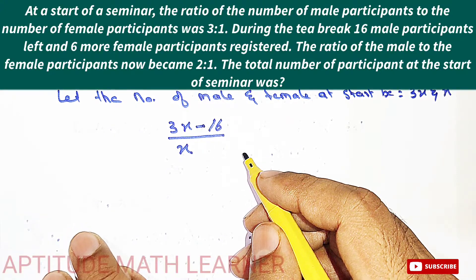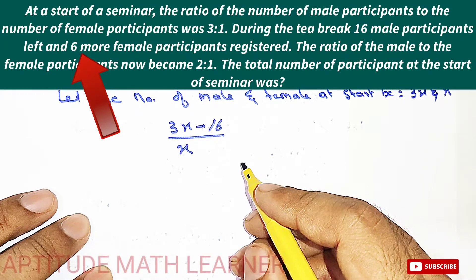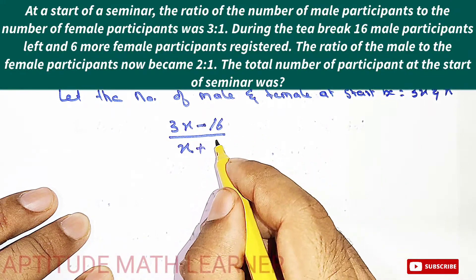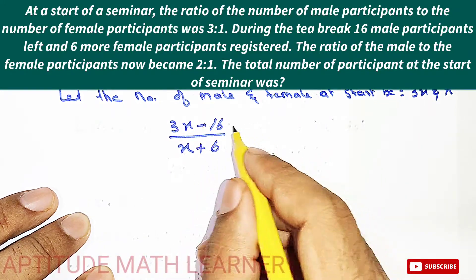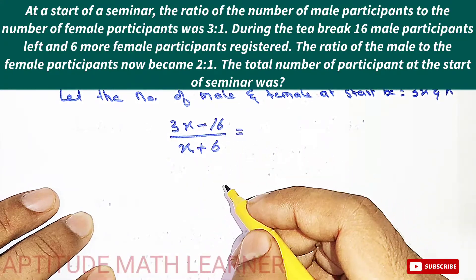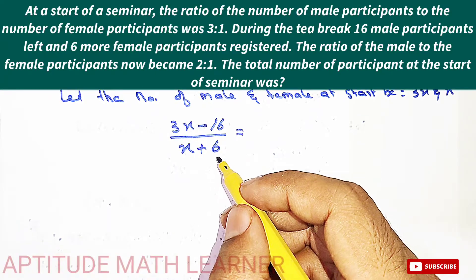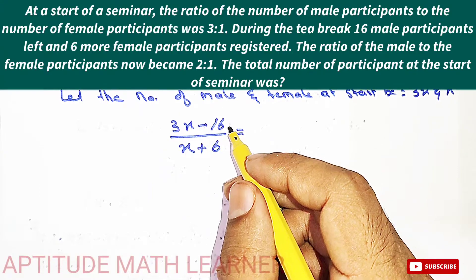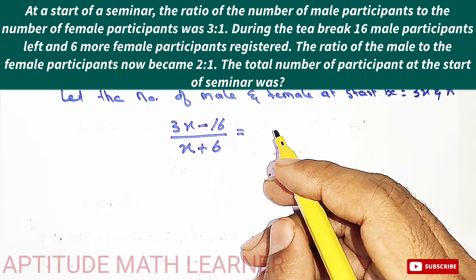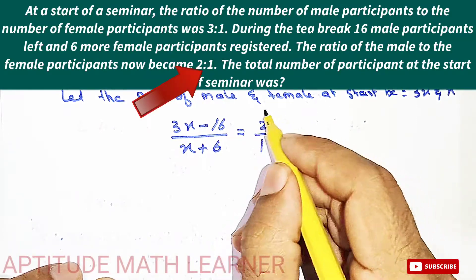And 6 more female participants registered, so the number of females becomes x plus 6. After 16 males left and 6 females joined, the new ratio becomes 2 to 1.